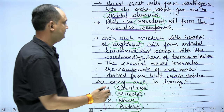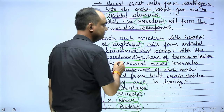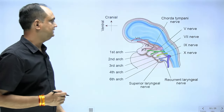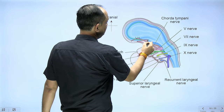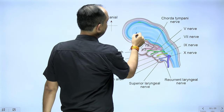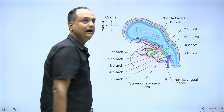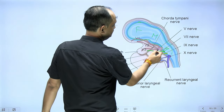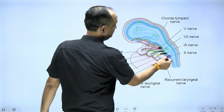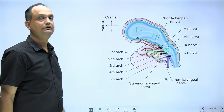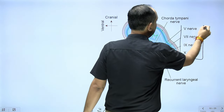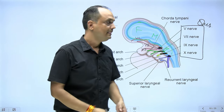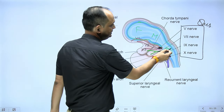The nerve component consists of cranial nerves arising from the hindbrain vesicle. These cranial nerves enter the different pharyngeal arches: the fifth, seventh, ninth, and tenth cranial nerves supply the pharyngeal arches. This is a very commonly asked exam question.